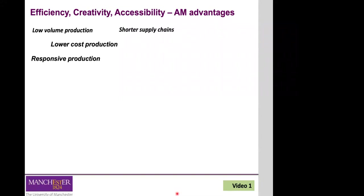Additive manufacturing also allows you to shorten supply chains — it has the capacity to simplify and shorten them. If you manufacture parts on site, you don't need transportation, and you can remove unnecessary international shipping, bringing manufacturing much closer to the customer at much lower costs. Because of the layer-by-layer principle, it also brings a huge freedom of design — in theory, any shape can be manufactured.